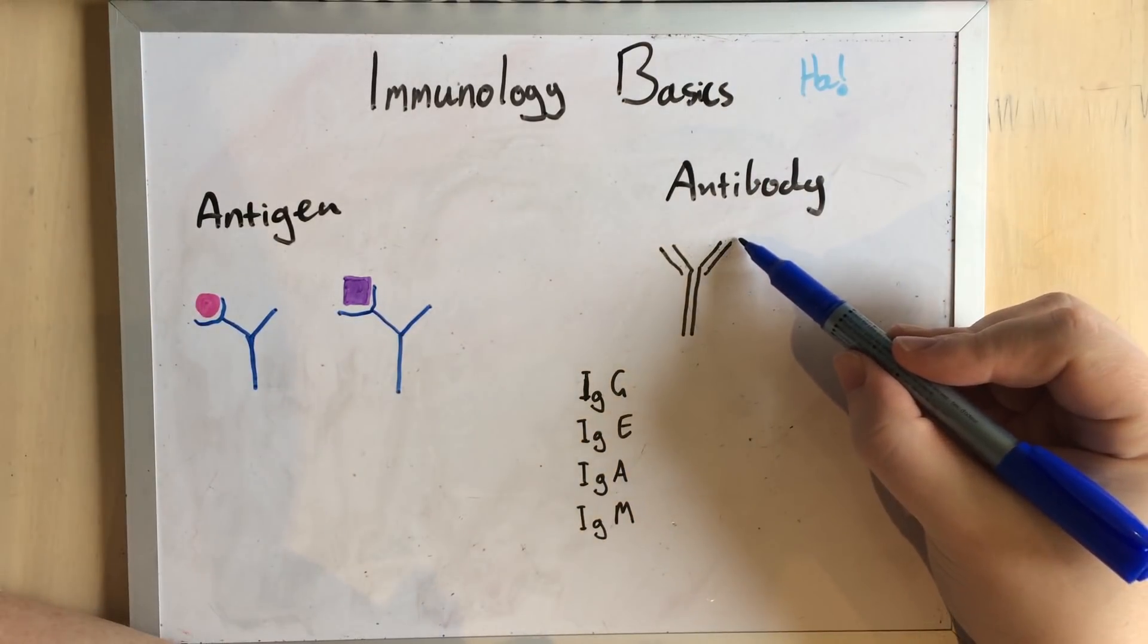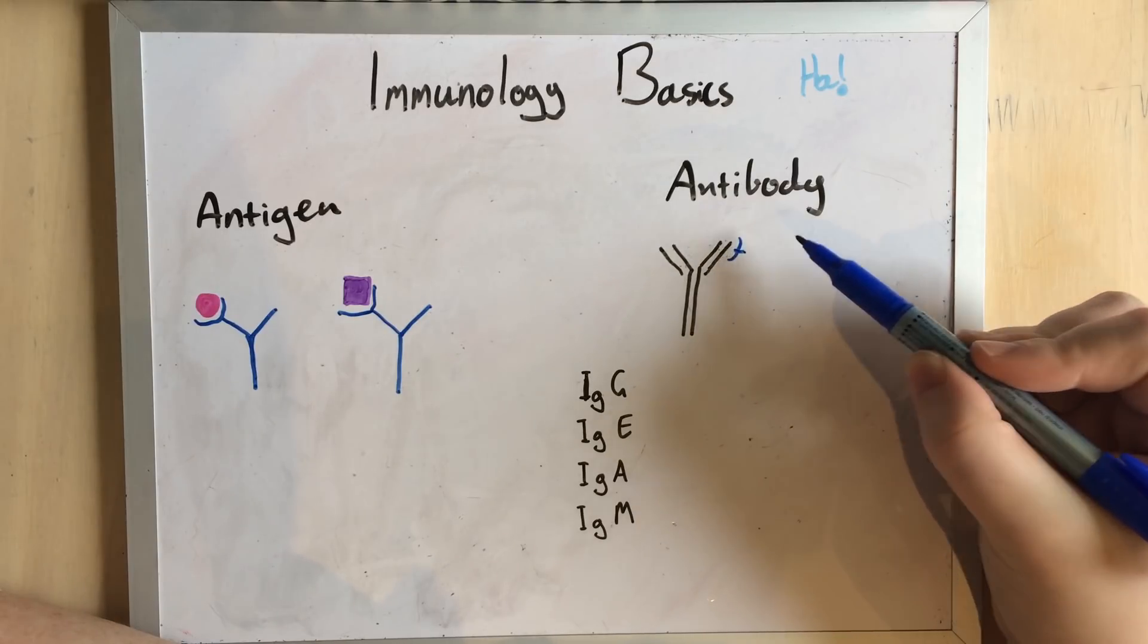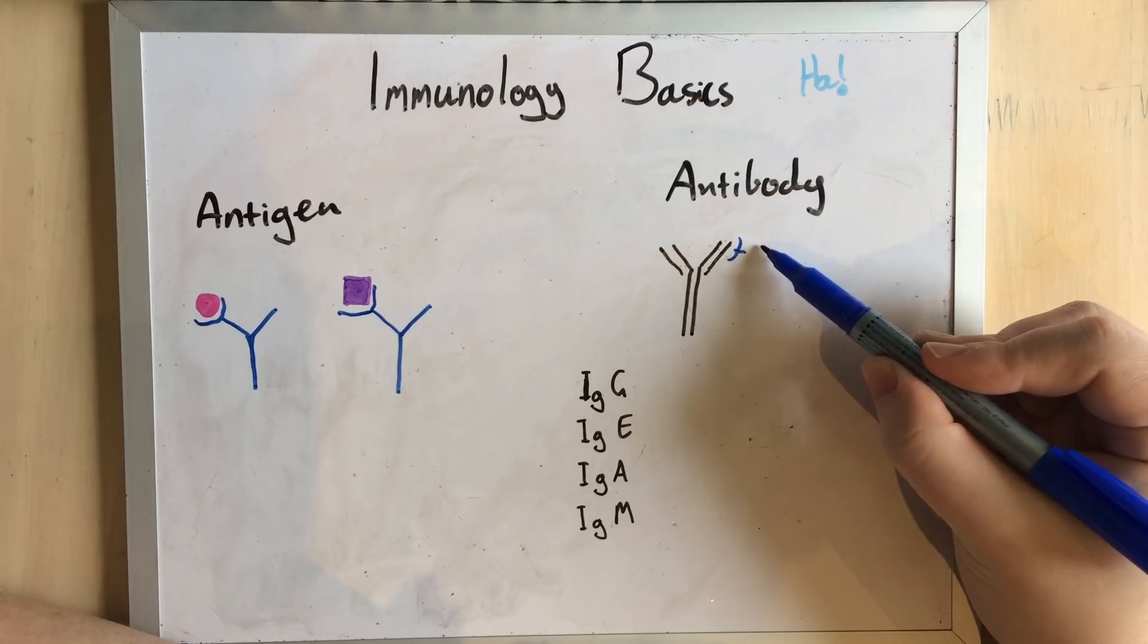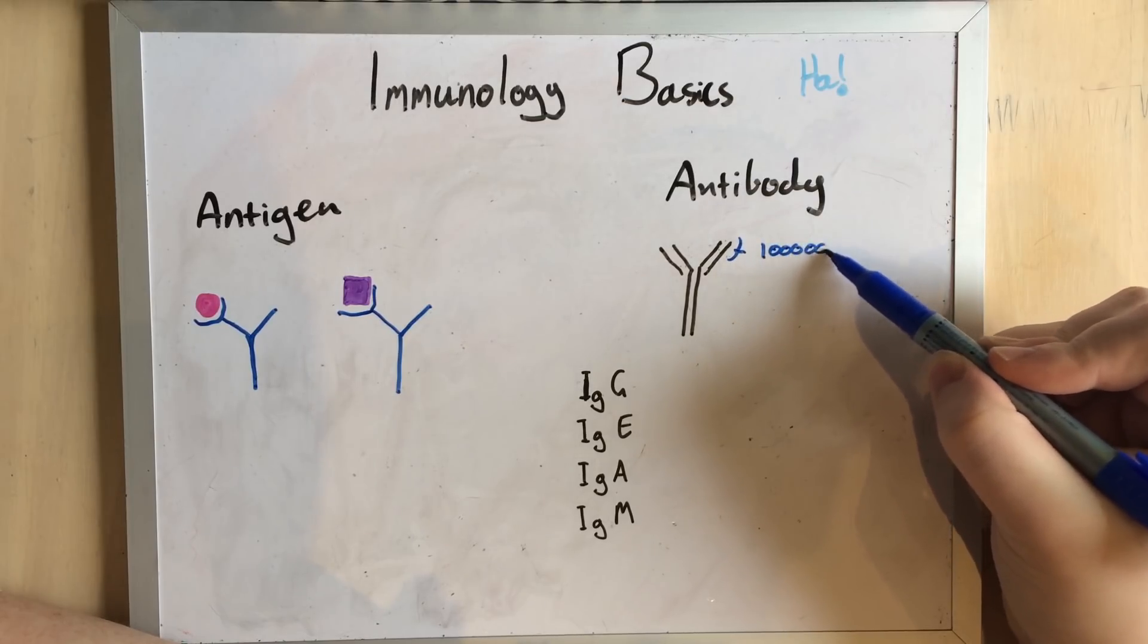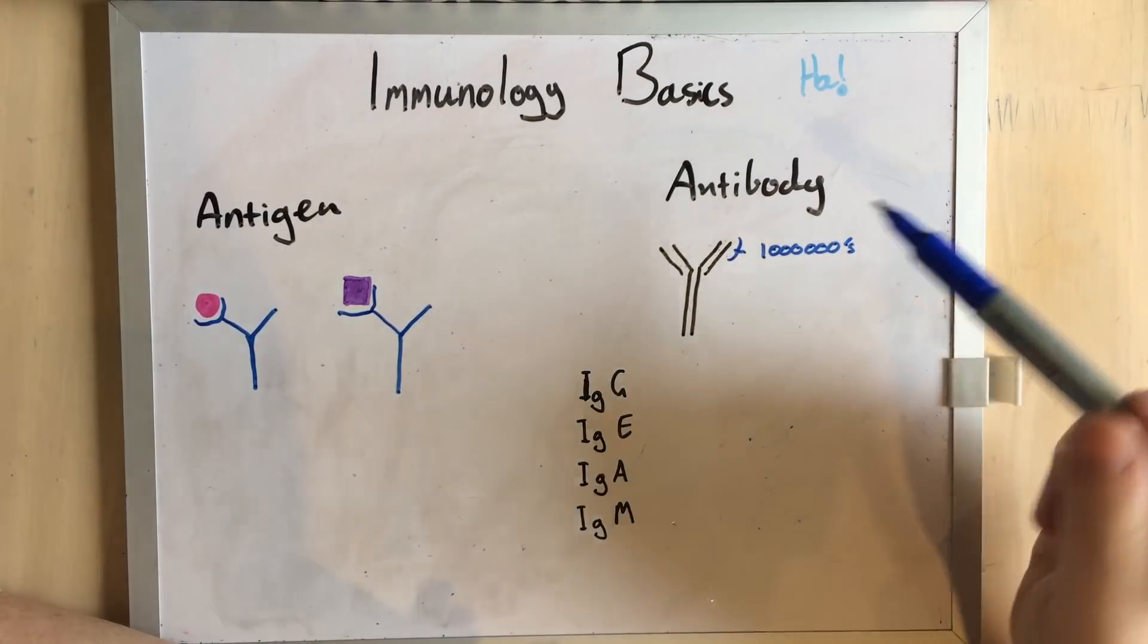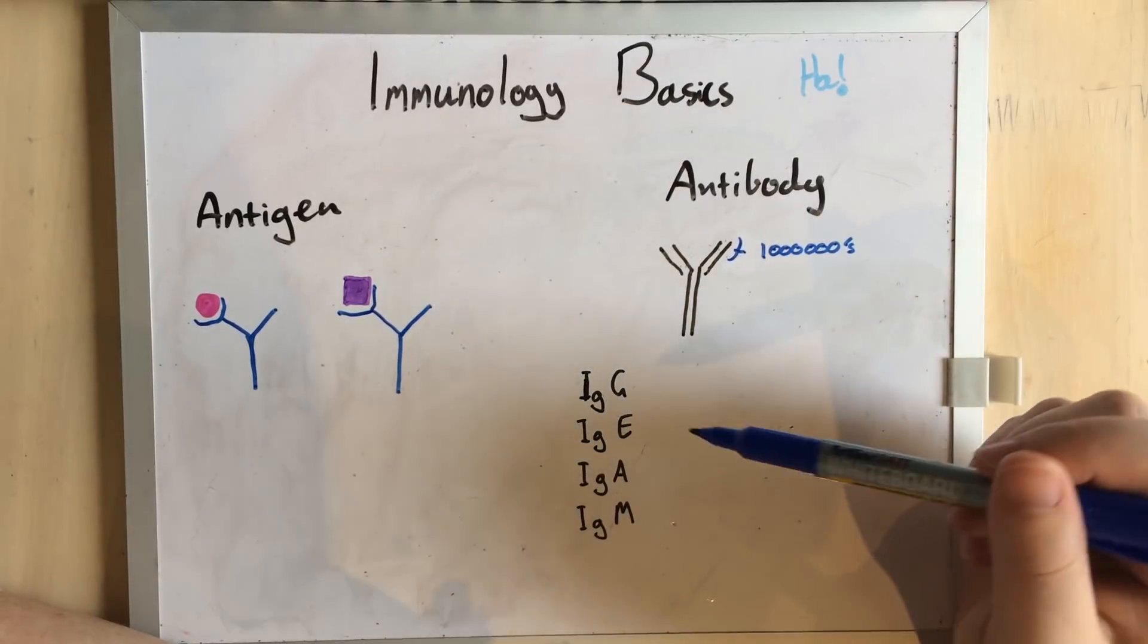They achieve this because the binding sites at the end of the antibody are very prone to mutation in the B cells, and this is permitted. This allows them to have basically millions of different potential combinations for binding to completely unknown and unpredictable external antigens.